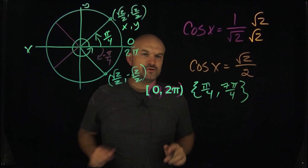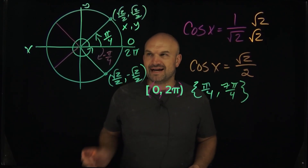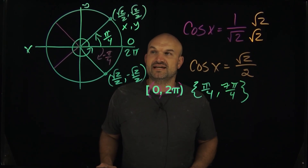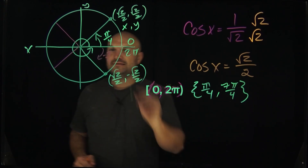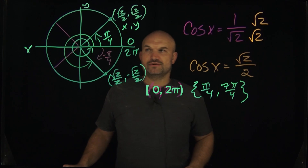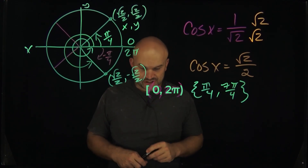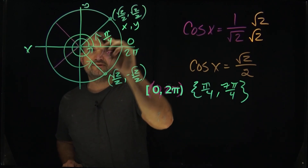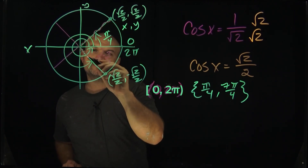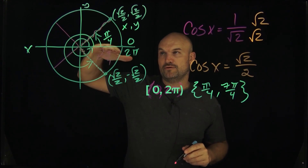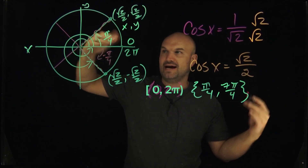So those are the two angles within the restriction of 0 to 2pi — pi over 4 and 7pi over 4 — and that's usually one of the most common answers students need to know. But we also need to find all of the solutions. When finding all solutions, we look for any relationship between our two answers. You can see they are pi/2 away from each other, since pi/4 plus pi/4 equals 2pi/4, which is pi halves.